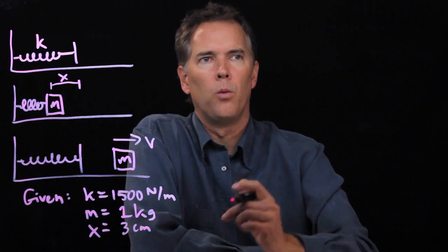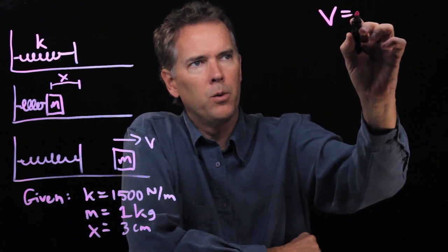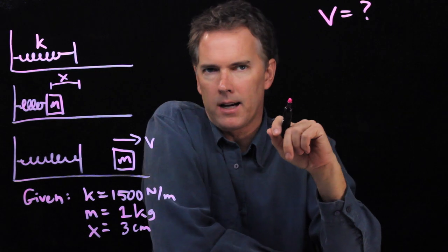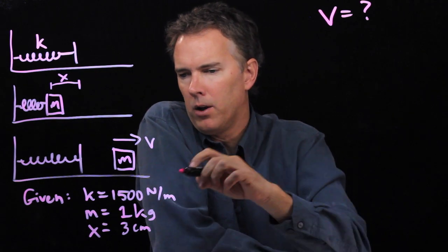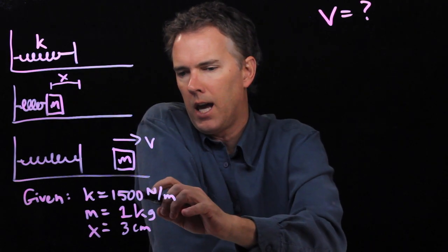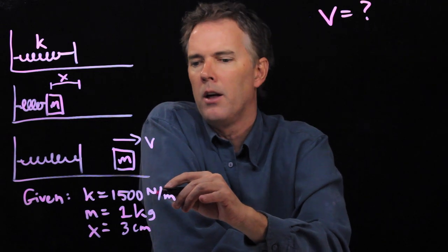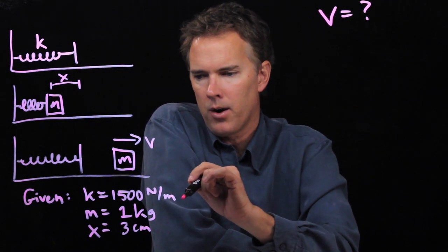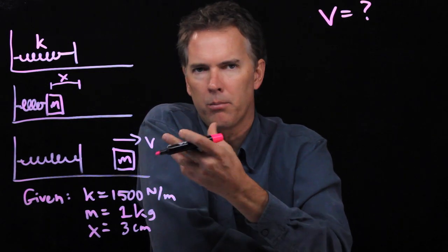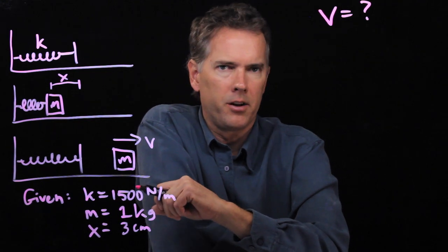And let's see if we can calculate what V is equal to, what's the speed of that block as it heads off. And we'll give you some givens here: the spring constant k is 1500 N/m, the mass of the block is 1 kg, and the distance that we compress that spring is 3 cm.